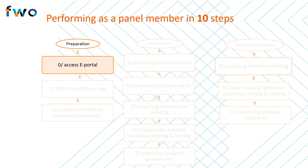During the first phase, it is important that you access the FWO ePortal. The FWO shares all applications and evaluations through this online platform, and you will also submit all reviews through this platform. There is a separate instruction video available on how to navigate the ePortal. The FWO will also invite you to indicate for each application whether you have a conflict of interest, and you will be able to indicate how closely your expertise aligns with each application to facilitate the distribution of applications amongst panel members. A separate instruction video on submitting conflicts of interest and confidence rate information is also available.